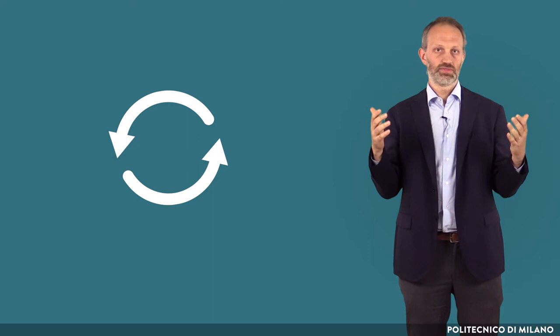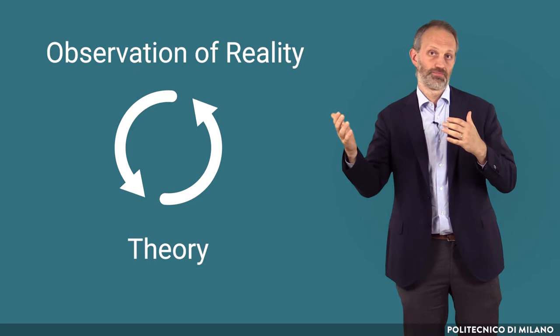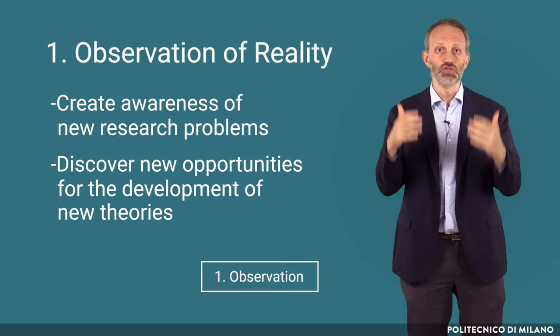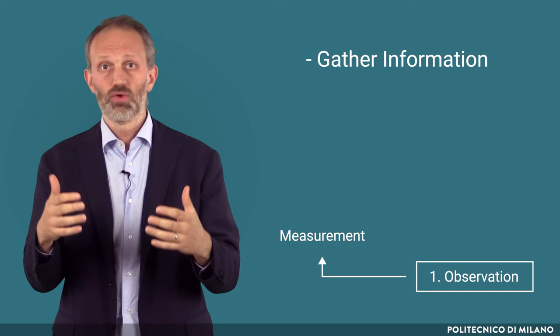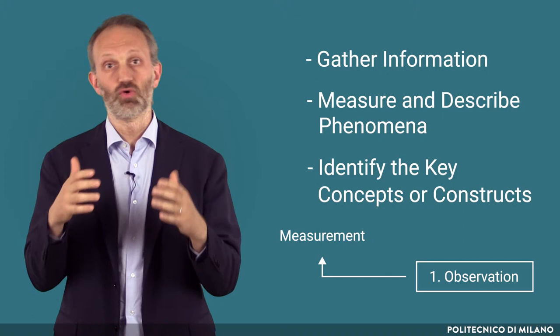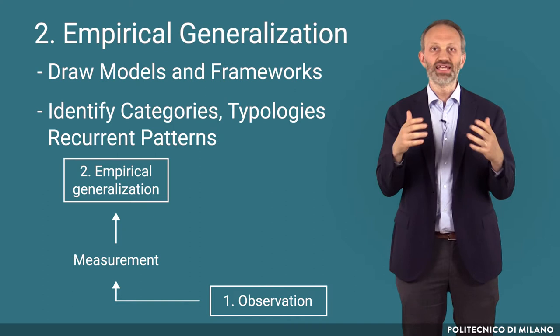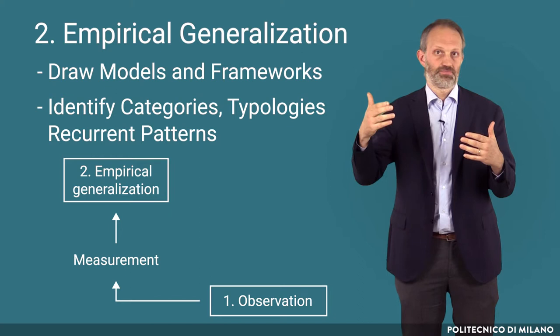We can represent research as a cycle that moves back and forth between observation of reality and theory. We start from the observation of reality to create awareness of a new research problem and to discover new opportunities for the development of new theories. In this first step we gather information, measure and describe phenomena, and identify the key concepts or constructs. The second step is called empirical generalization, in which we draw models and frameworks, identify categories and typologies, as well as recurrent patterns.